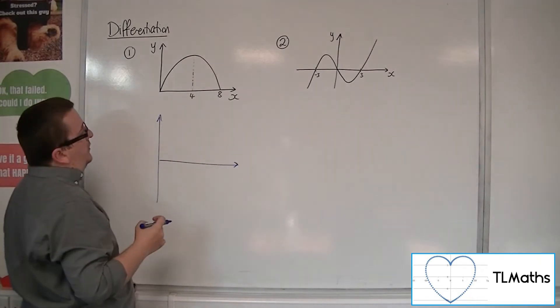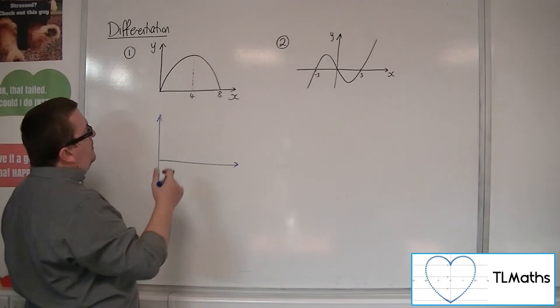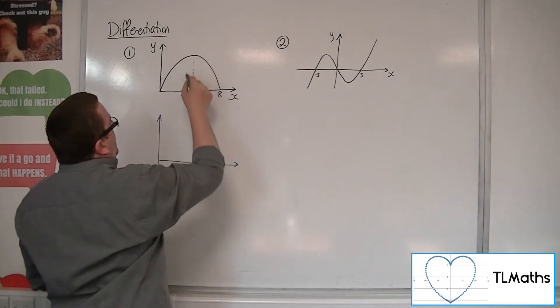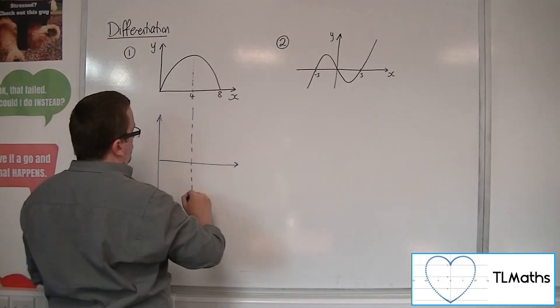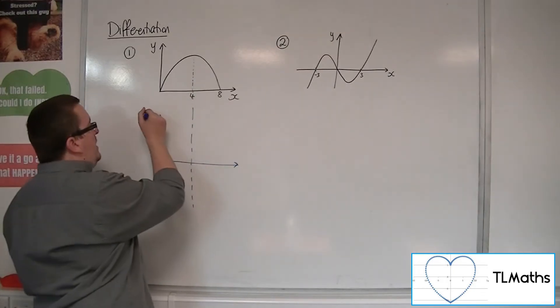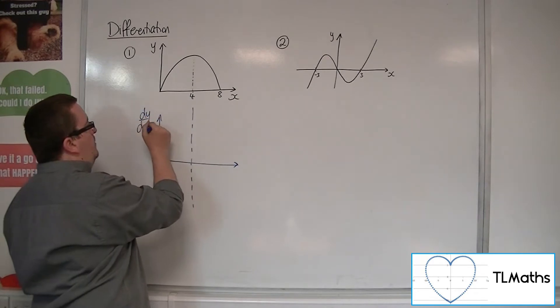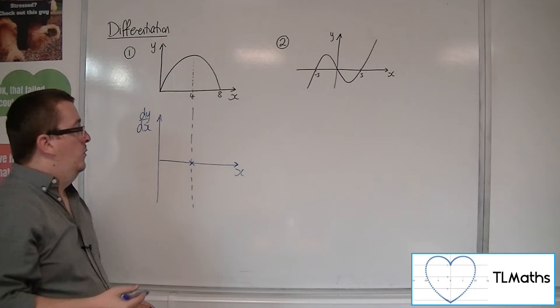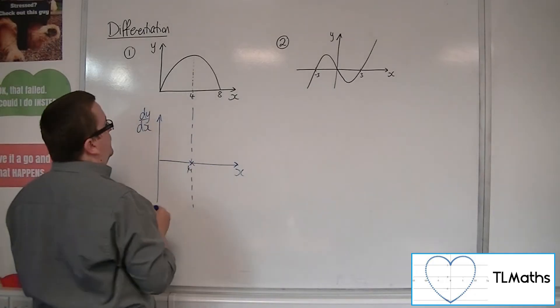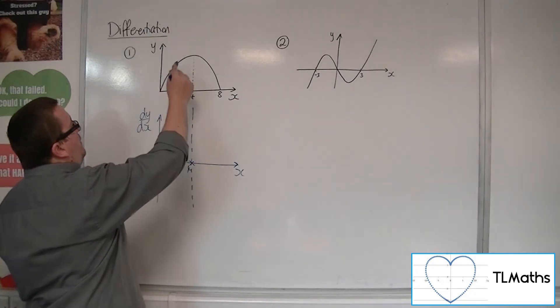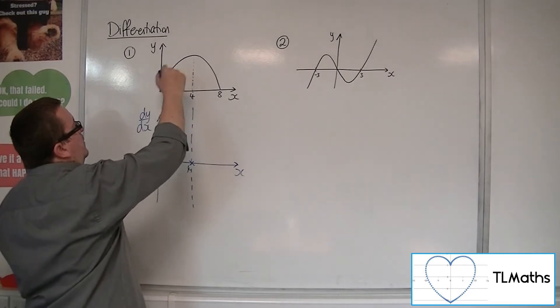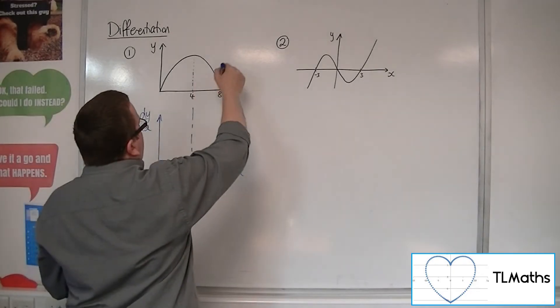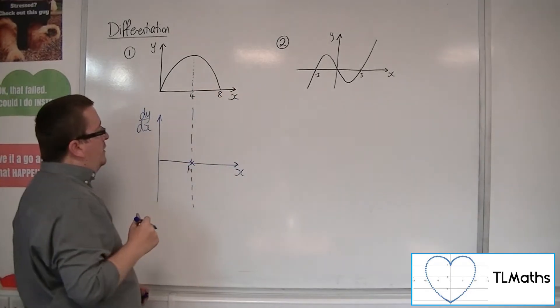So let's say we're going to sketch that. Now, if we put in this 4, then I know that the gradient function, dy by dx, is 0 when we're at 4. It is positive between 0 and 4, and it is going to be negative between 4 and 8.